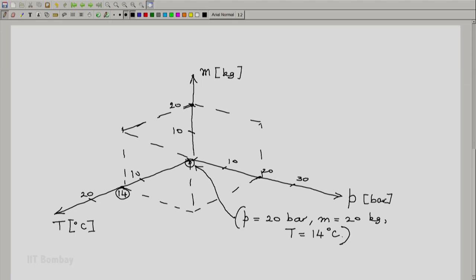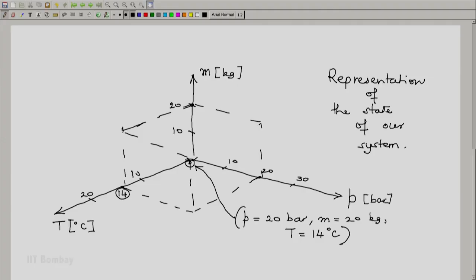This is a representation of the state of our system. In this particular case, because there are three properties, we have three-dimensional geometry.